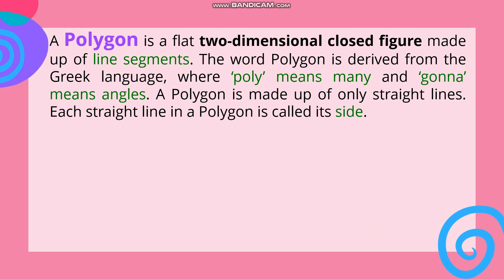A polygon is a flat two-dimensional closed figure made up of line segments. The word polygon is derived from the Greek language where poly means many and gonna means angles. A polygon is made up of only straight lines. Each straight line in a polygon is called its side. Ang polygon ay kabilang sa closed figure at meron din itong two dimensions - ito yung length at width. The line segments forming a polygon are called sides and the point where two sides meet is called vertex.